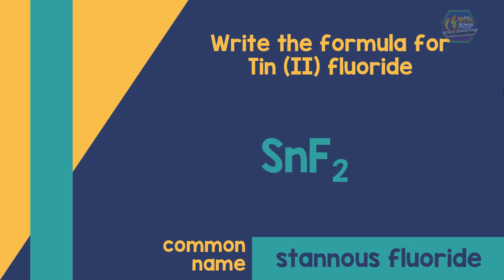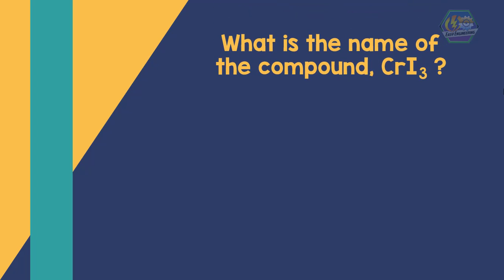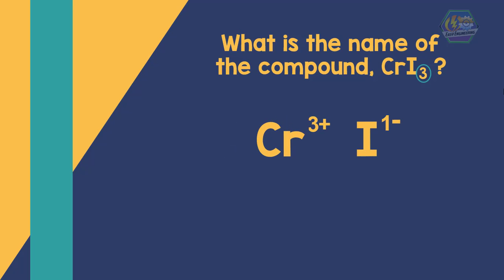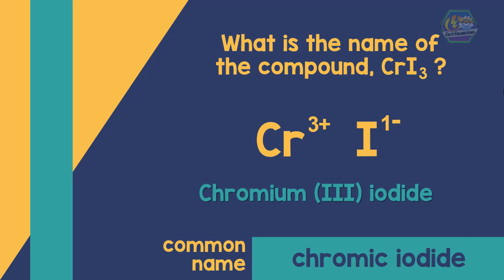For another example: given a compound formula, we need to find its name. Iodine's ionic charge is 1− and chromium's ionic charge is either 2+ or 3+. Since the subscript of iodine is 3, the ionic charge of chromium must be 3+. Therefore, the systematic name of the compound is chromium(III) iodide, and its common name is chromic iodide.